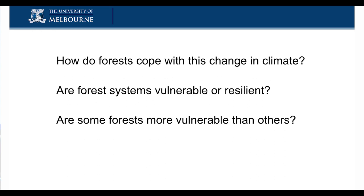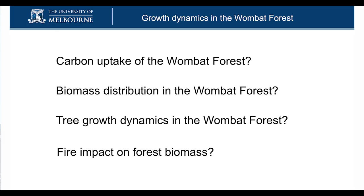Key questions for us are: how do forests cope with these changes in climate? Are there forest systems that are more vulnerable, or forests that are less vulnerable and more resilient? When we started our work in the Wombat Forest — now going on for about 10 years — these were some of the key questions. Is the Wombat Forest actually a carbon sink? Does it take up carbon, and when does it do it? Is it a continuous sink, or are there times of year or specific climatic events when there's not so much carbon coming in?